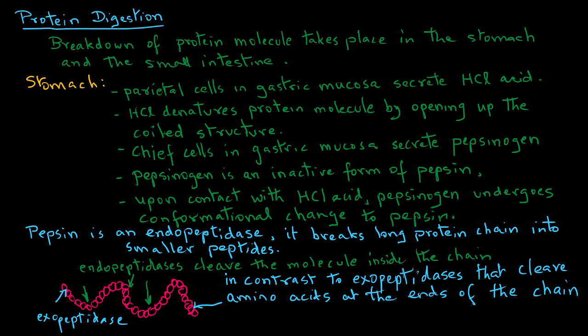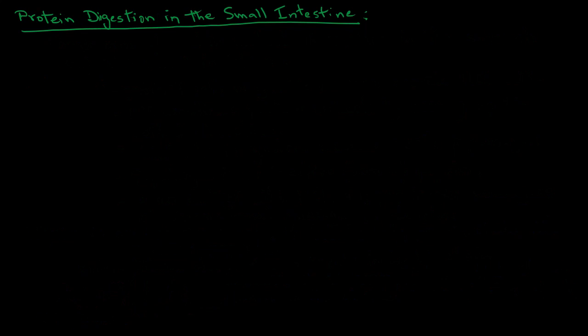In the stomach, pepsin can partially digest about 10 to 15 percent of the dietary protein intake. The rest of the protein digestion takes place in the small intestine, so let's look at protein digestion there.